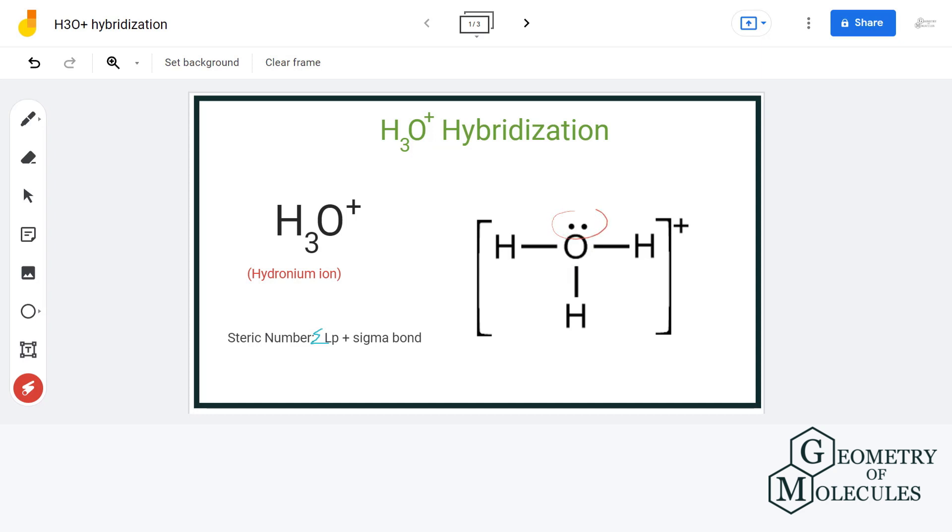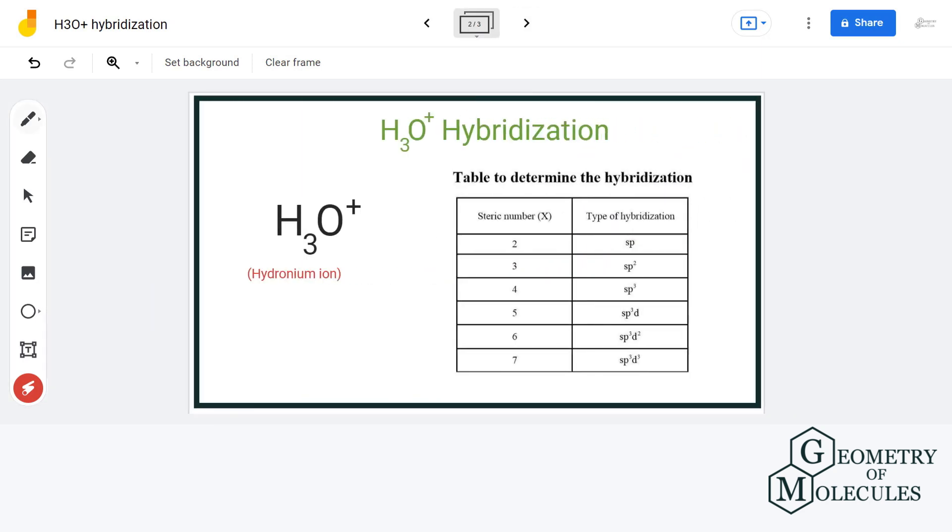Let us add the two. We have three sigma bonds plus one lone pair of electrons that gives us a steric number of four.